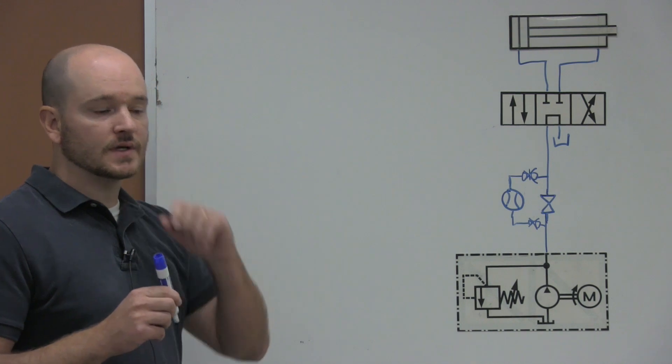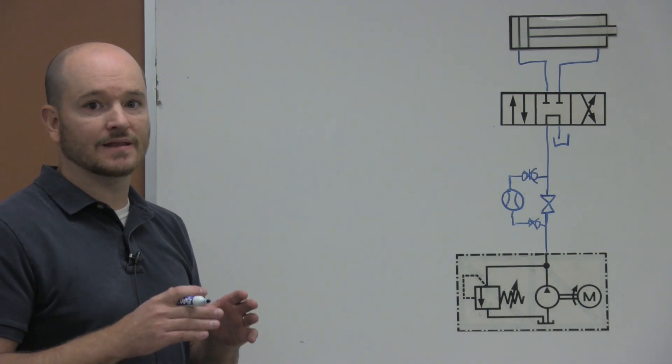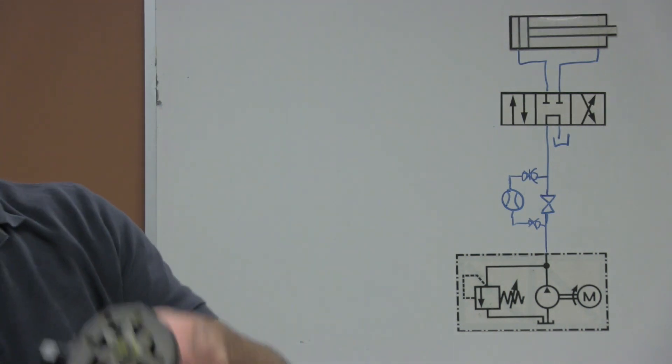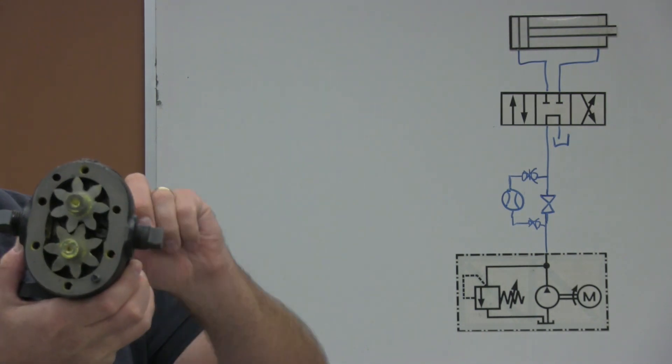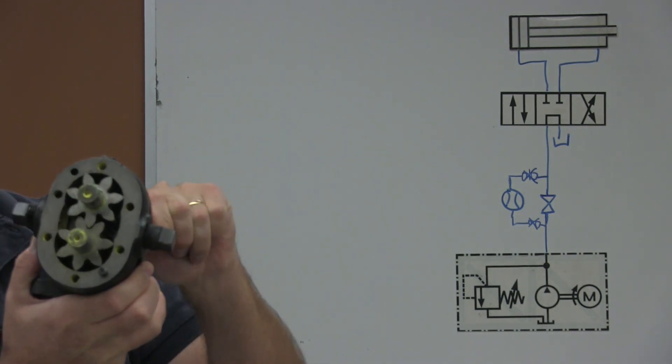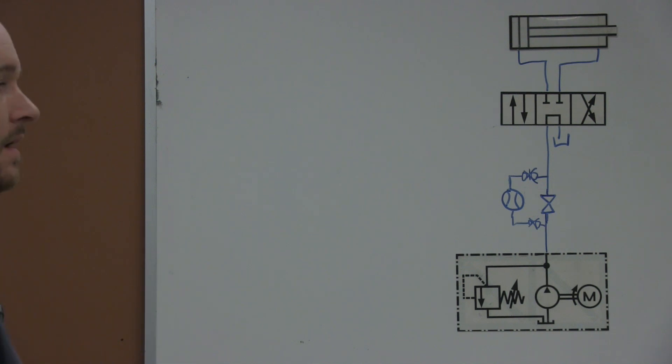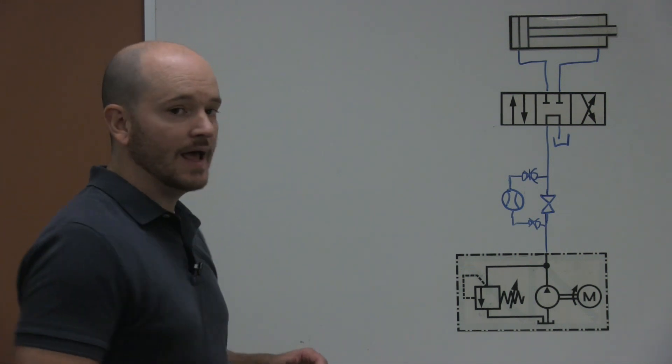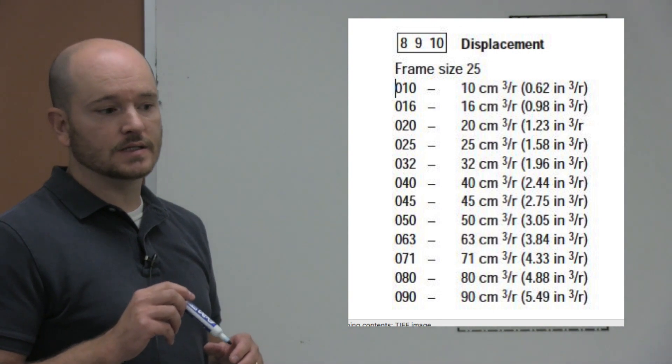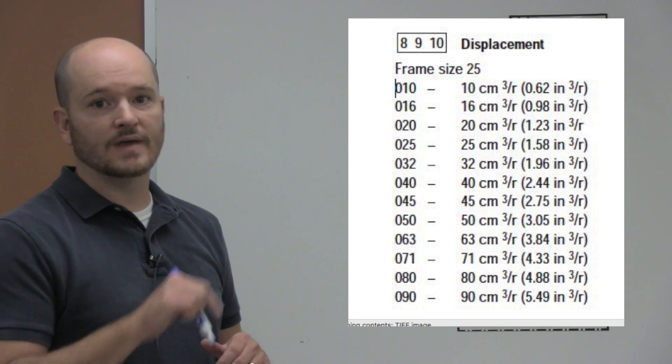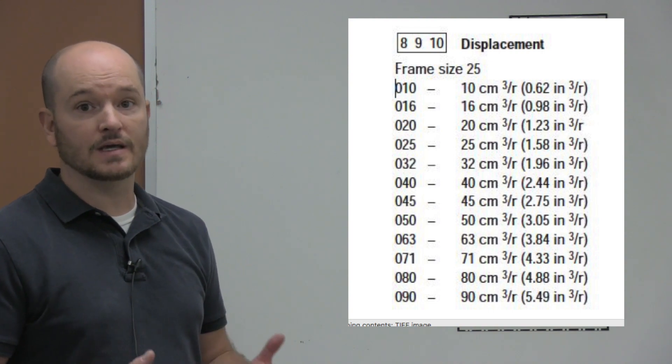The first important piece to this calculation is to get the displacement per rotation of a pump, which is how much a pump will move when it rotates 360 degrees. Each fixed pump has this value assigned to it in the user manual, so you would need to take the model number, go to the manual, and figure out what that value is.